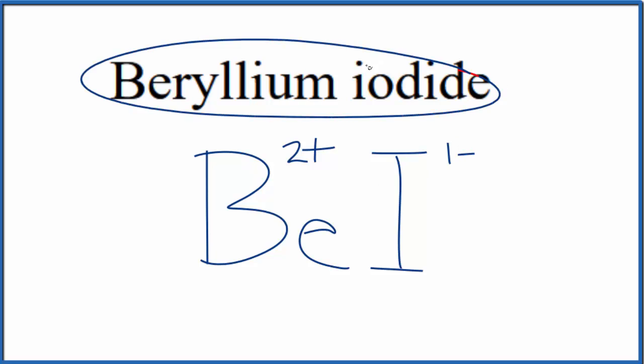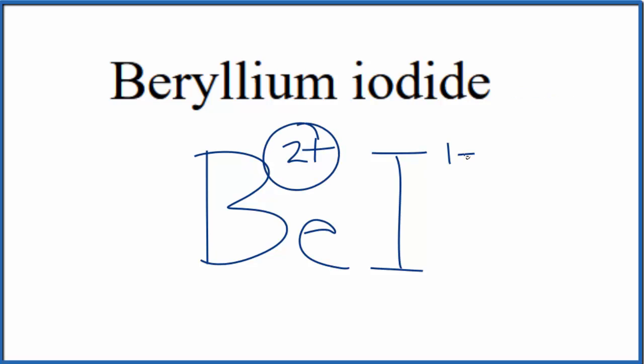So because this is a neutral compound, there's no word ion written after it, these two charges need to add up to 0. They need to give us a net charge of 0. To do that, if we had two of these iodide ions, put a 2 here, 2 times 1- is 2-, that would balance out the 2+, give us a net charge of 0.